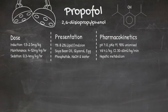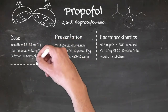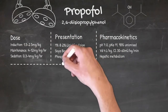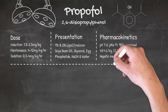Although propofol's elimination half-life is actually several hours, its effects only last a few minutes because it is rapidly distributed to peripheral body compartments. Propofol is metabolized by the liver, with 30 to 60 ml per kilo of plasma cleared of propofol every minute.